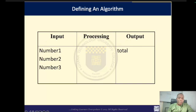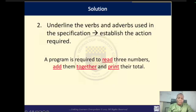In our problem, our software requires three numbers — we represent those as number one, number two, and number three. The output is a total. You can find the processing steps by identifying the verbs in the problem. Looking critically, the verbs are: read, add, and print. So the program is required to read three numbers, add them, and print the total — which is exactly what you have been asked to do.